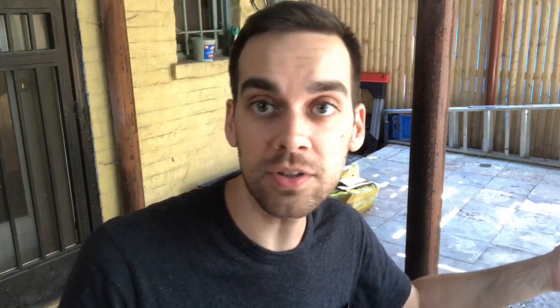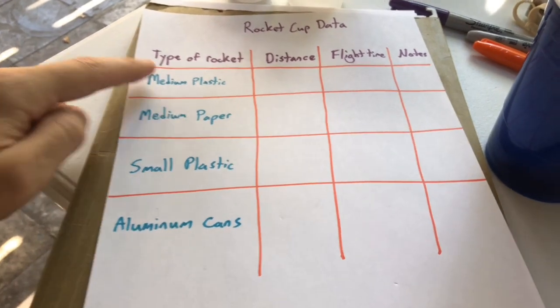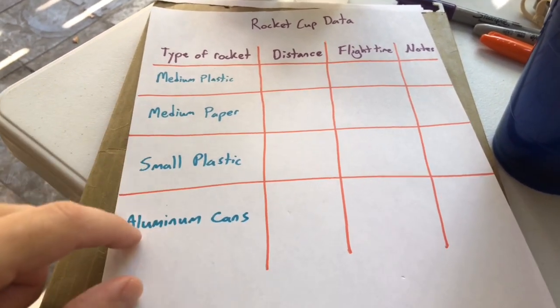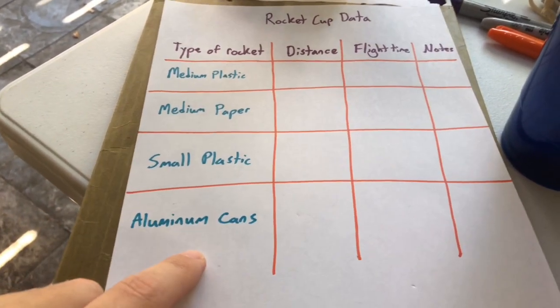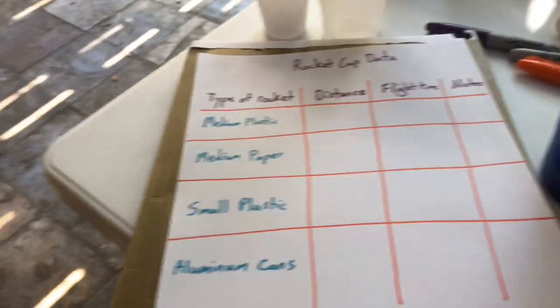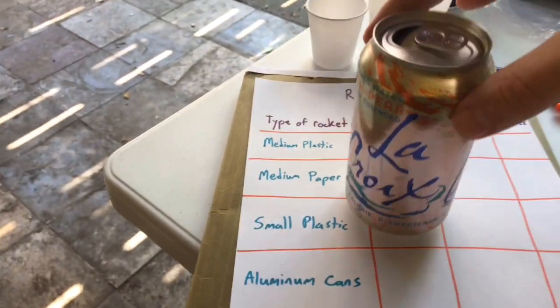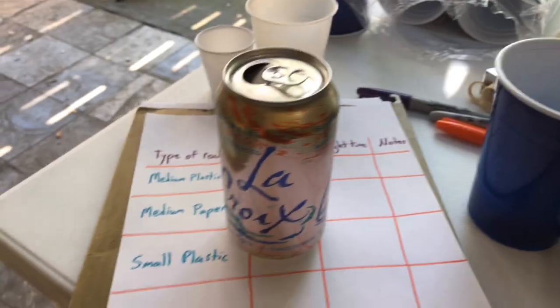As we think about our rocket cups, let's also think about the different materials that we could use and the different types of cups. You could use big plastic cups, medium plastic cups, little ones. You could use paper or styrofoam cups. You could have different results with all of these things — whatever you have, you can use. You can see here in blue under 'type of rocket' that I've made space for a few different types. I even included aluminum cans because those are a different material I'm going to try, different from my plastic cups.